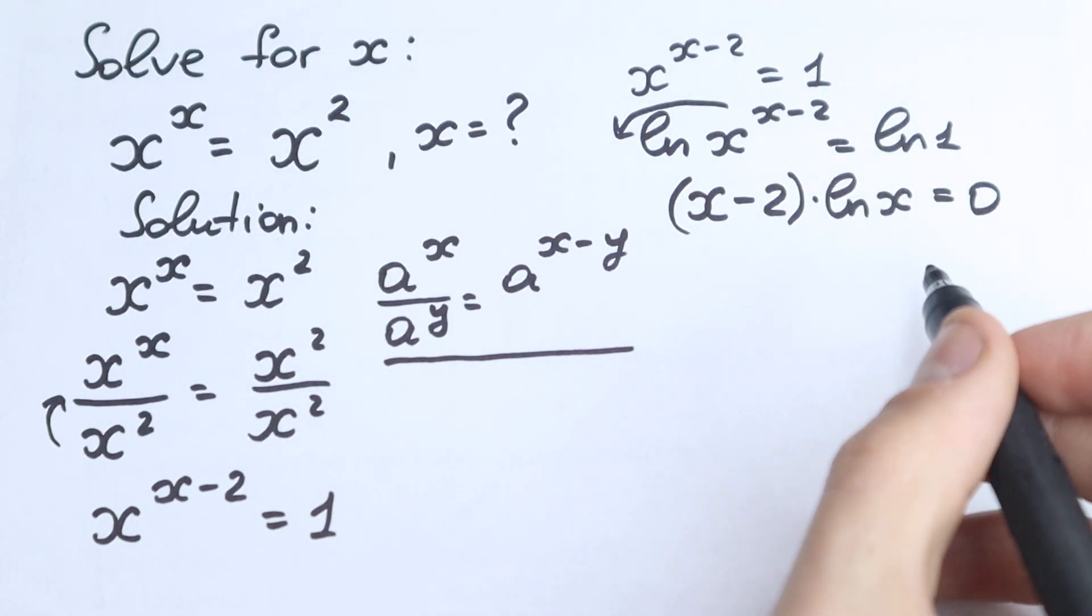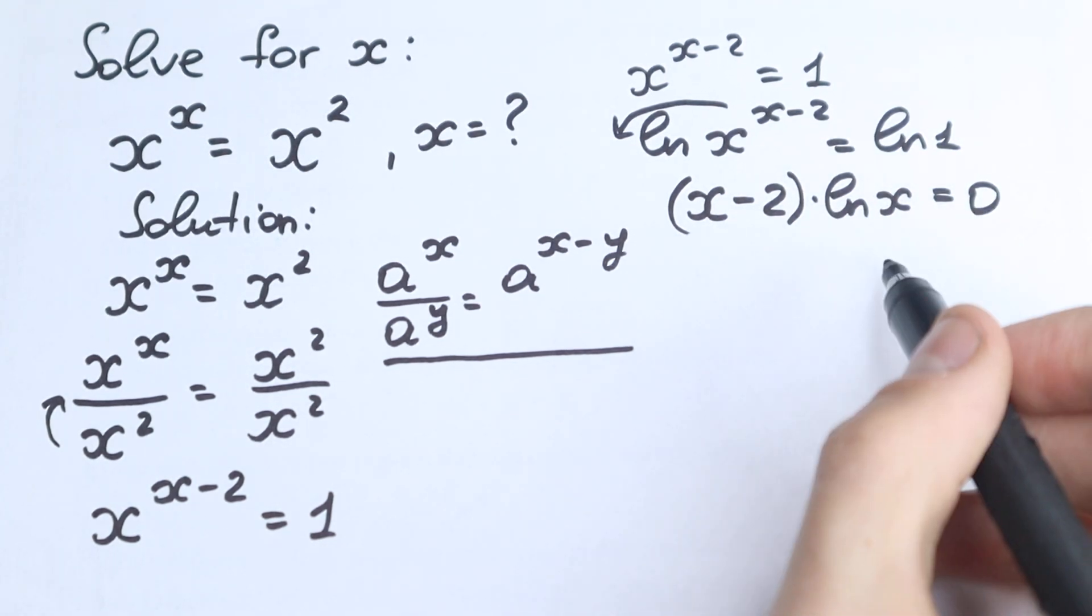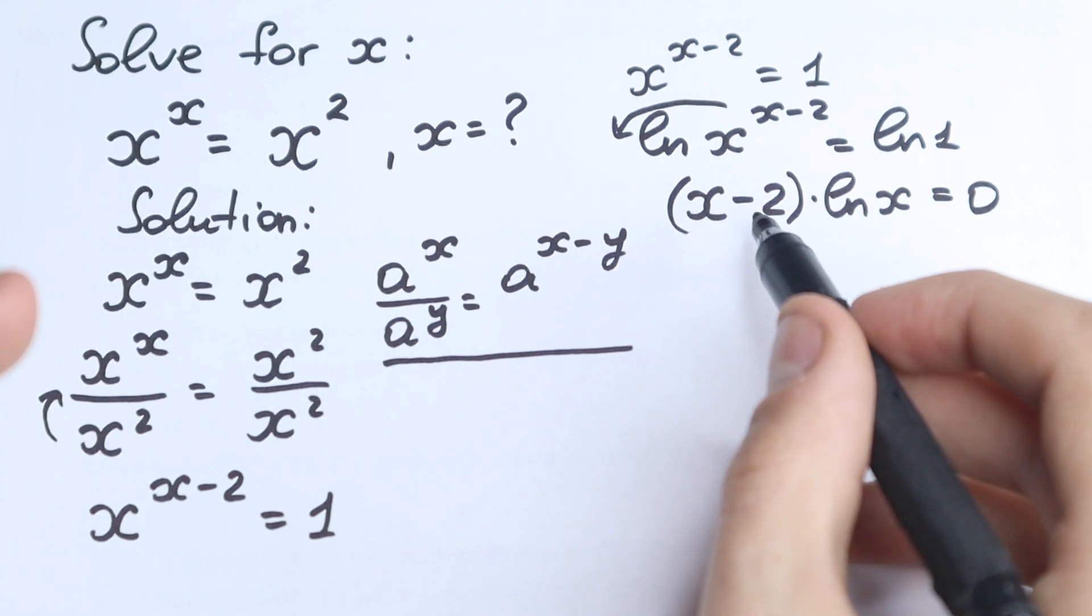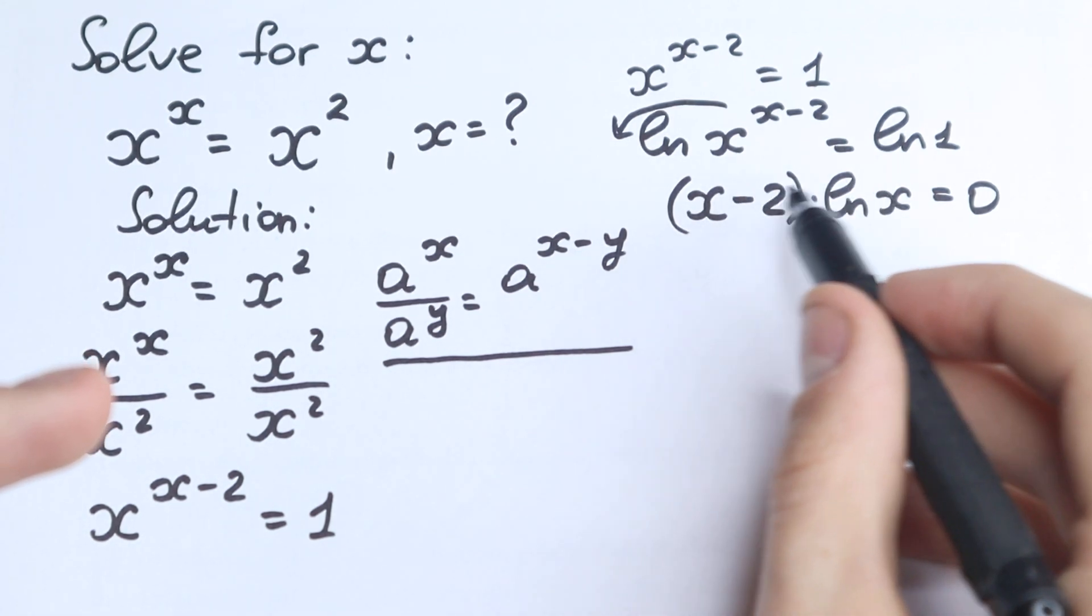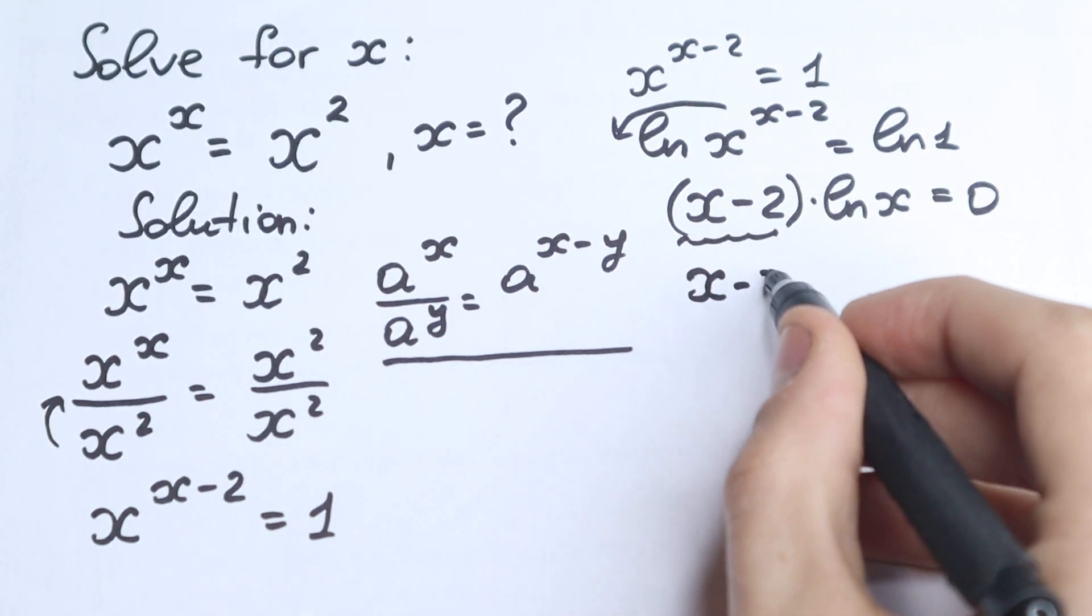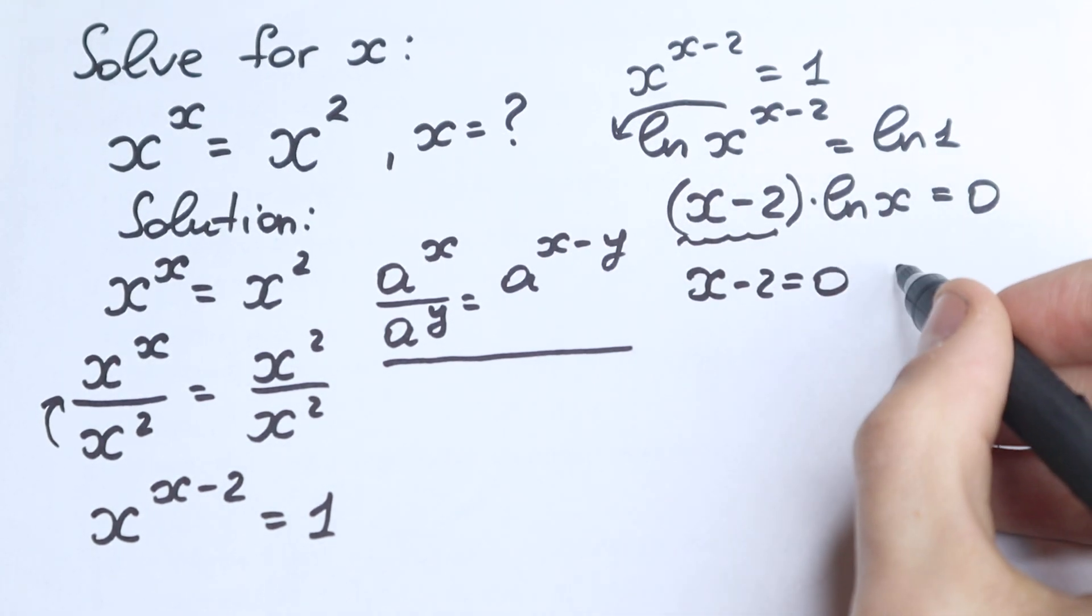And right now a really interesting moment because we have a product which is equal to 0. If you know a little bit about math, you need to know that, you should know that we have a product equal to 0, then this equal to 0, so x minus 2 equal to 0. And natural log x equal to 0.